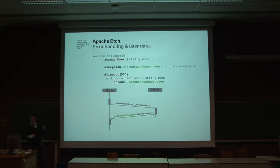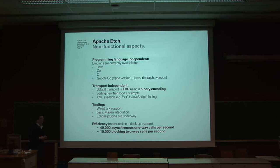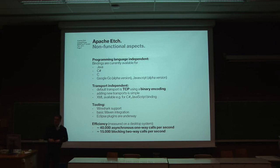The Edge compiler compiles your network service description and generates code for various languages — for example, C#, Java, and Google Go. There are also early-stage implementations for Python and other languages. Java, C#, and C are stable versions you can use right now. JavaScript, Python, and Google Go are available in an alpha state that implements the basic protocol functionality.